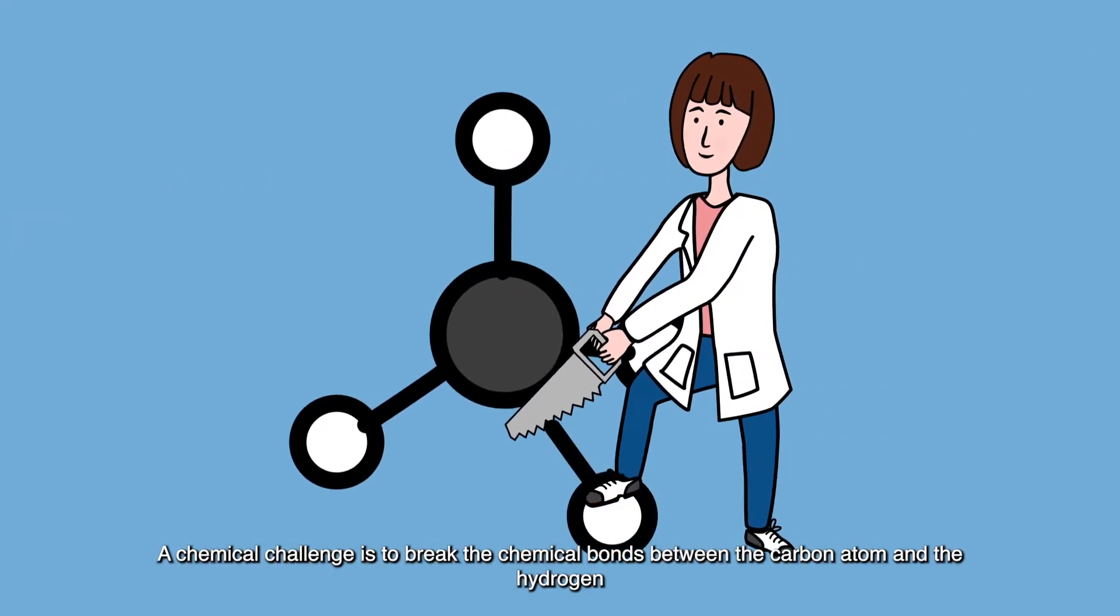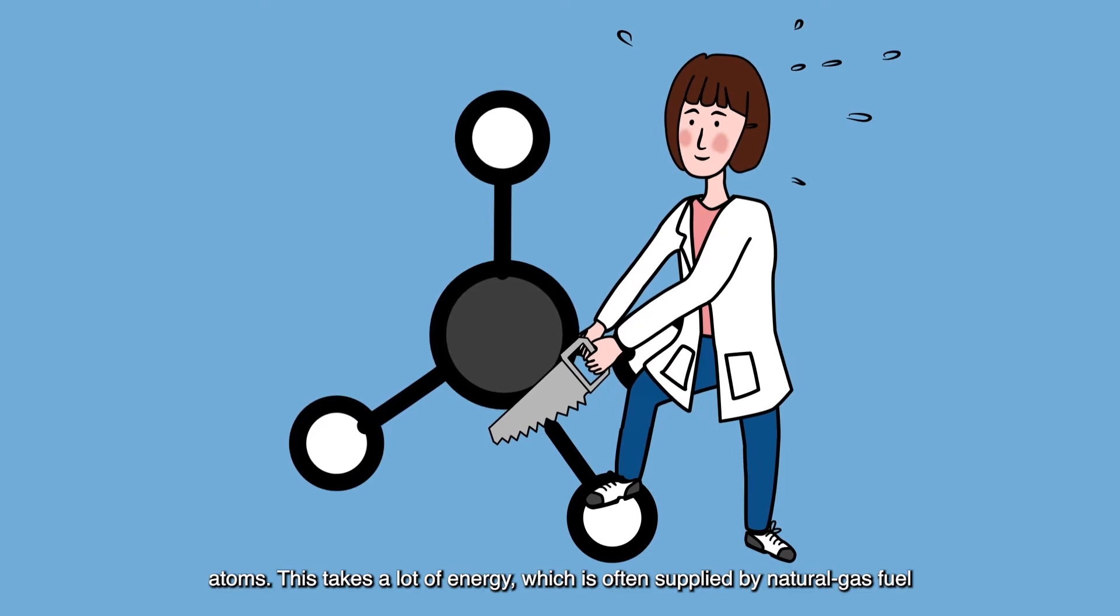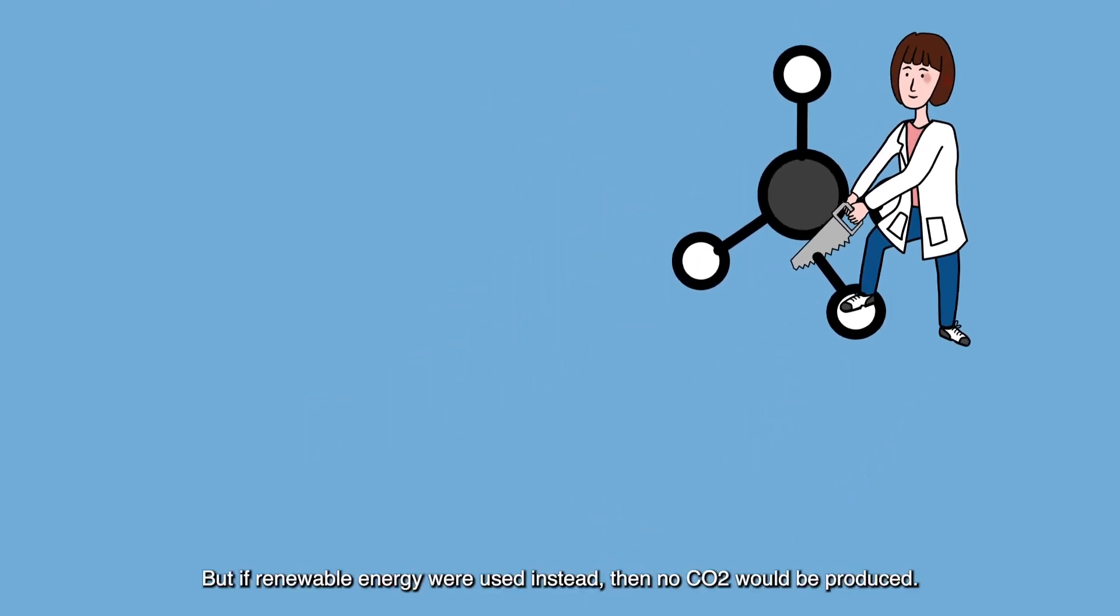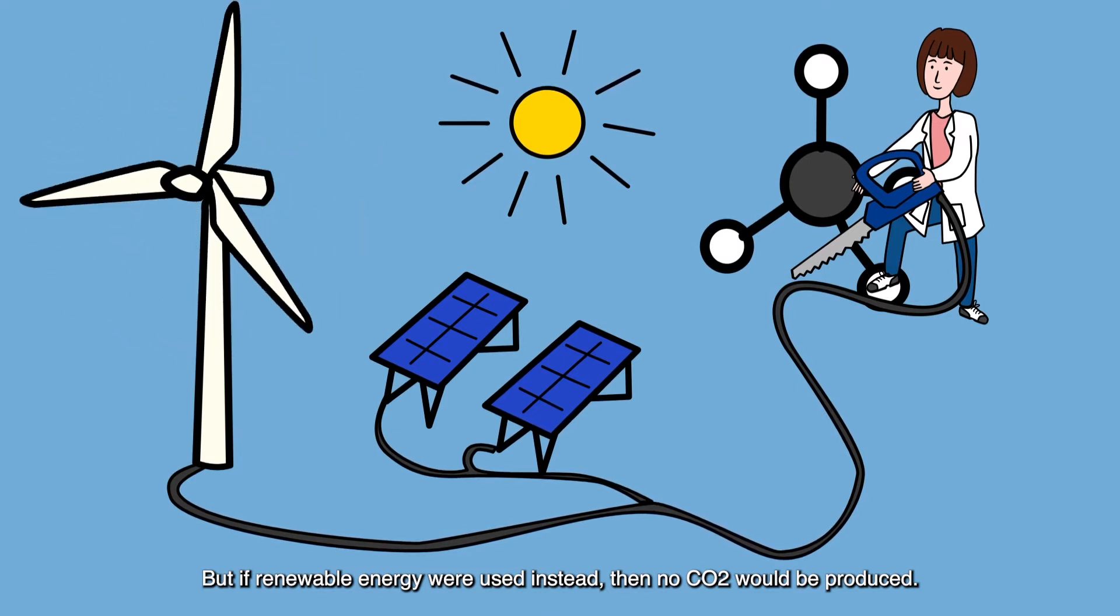A chemical challenge is to break the chemical bonds between the carbon atom and the hydrogen atoms. This takes a lot of energy, which is often supplied by natural gas fuel. But if renewable energy were used instead, then no CO2 would be produced.